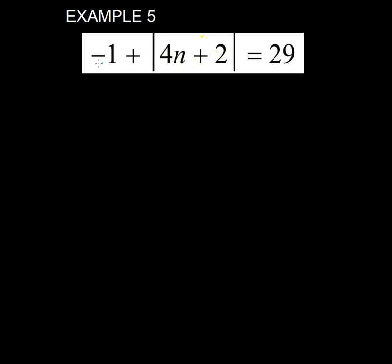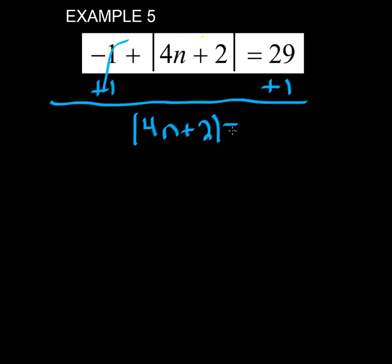How do we take care of that? We do the opposite. Because I'm adding a negative 1, I need to do the opposite. So I'm going to add 1 to both sides. We get the absolute value of 4n plus 2 equals 30.